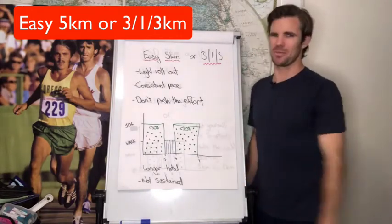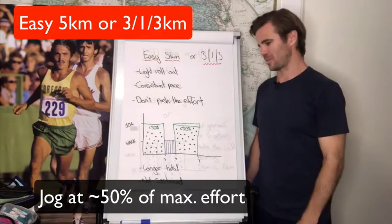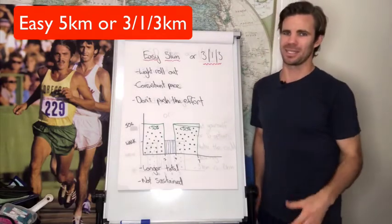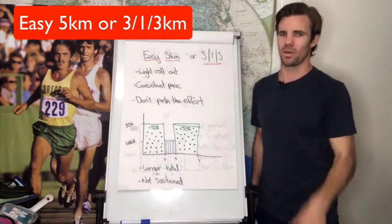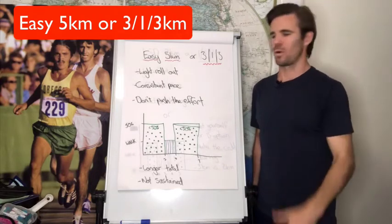Your jog efforts are roughly 50%. I wouldn't go anything over 50% at max. A good way to gauge is a pace whereby you can hold a conversation or talk while you're running.